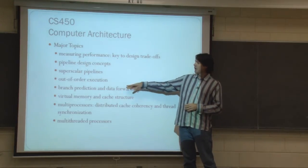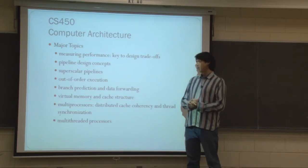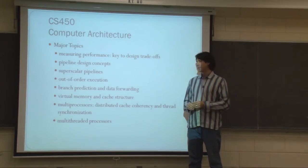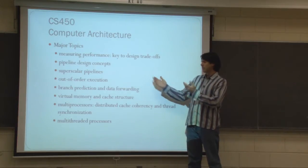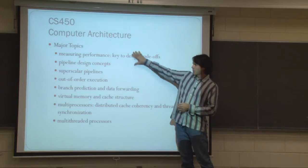Key concepts in there are branch prediction. We'll talk about the G-share branch predictor, which is the basis of most of the ones being used now. Different forms of data forwarding, register files, stuff like that. So this is kind of the processor here.